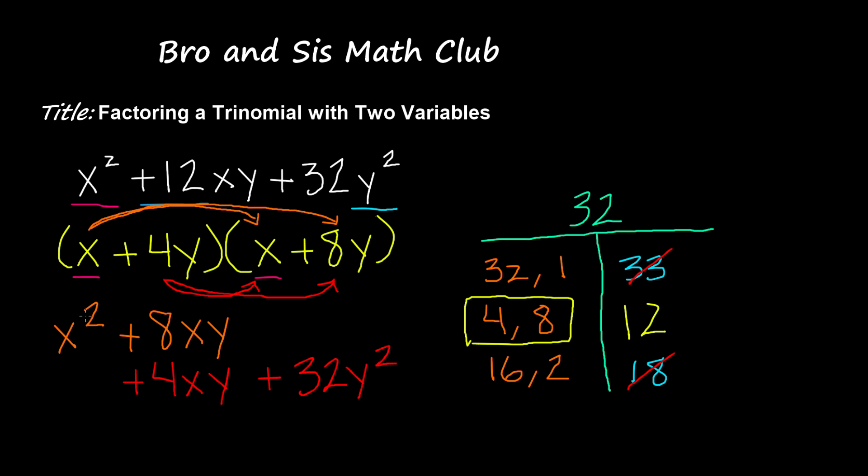So now when we add this all together, we get x squared plus 12xy plus 32y squared.